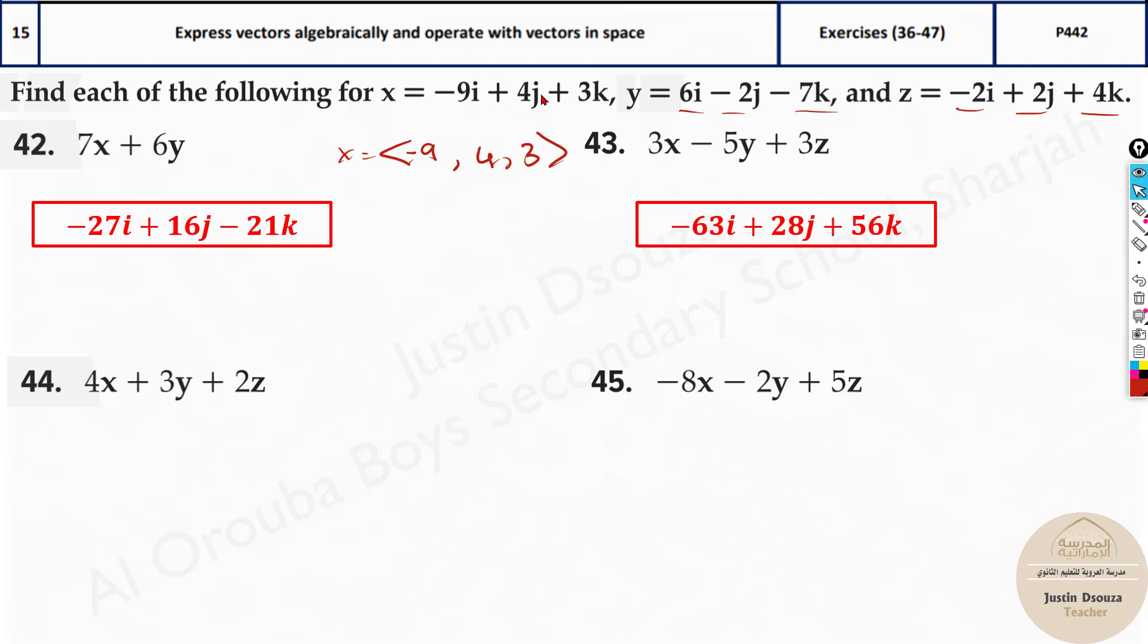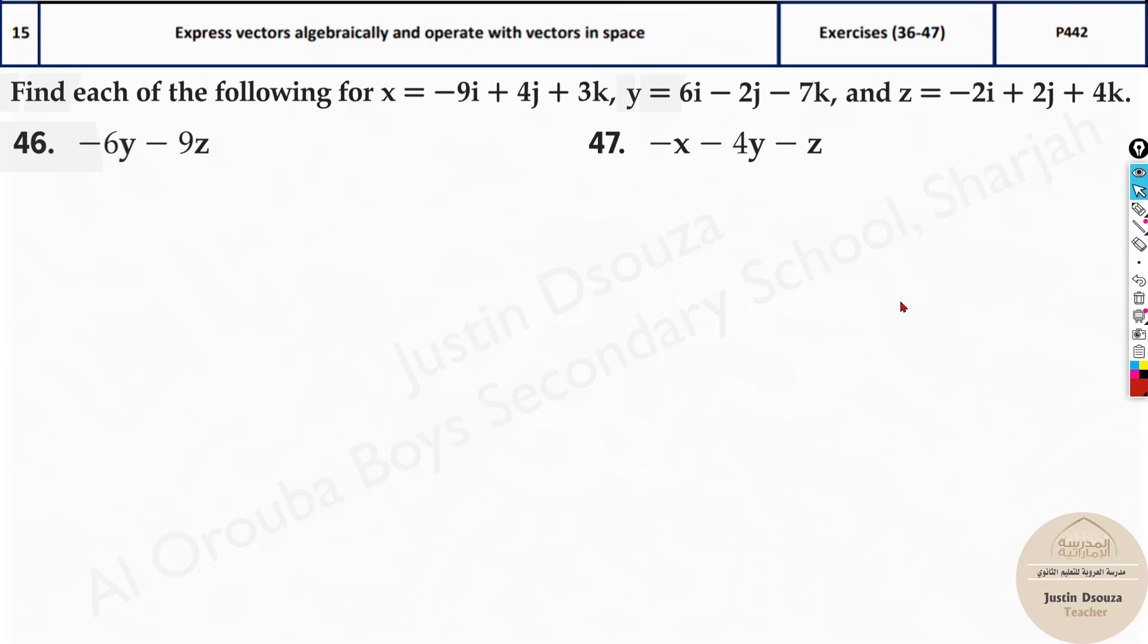Now since they are given in terms of i, j, k, remember after you solve it up, write the x term as i, j and k, the coefficients, the answers will be the coefficients of i, j and k, the easiest of all and that's it.